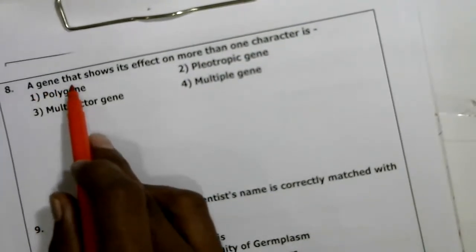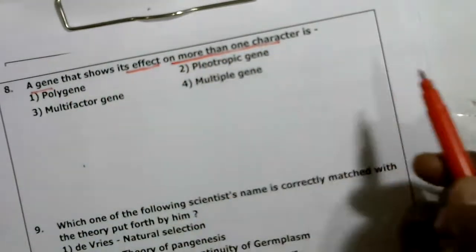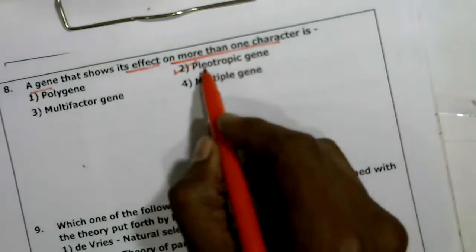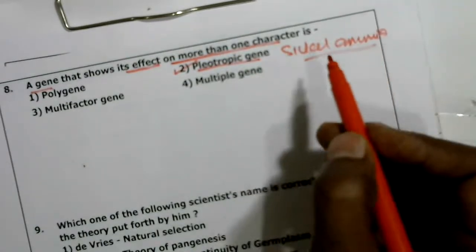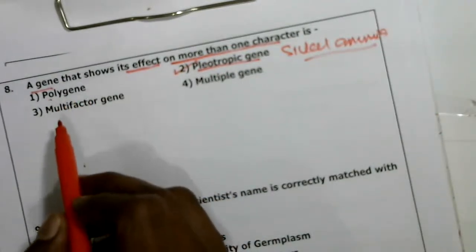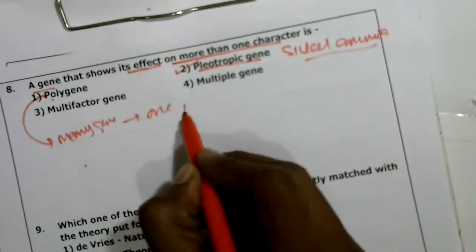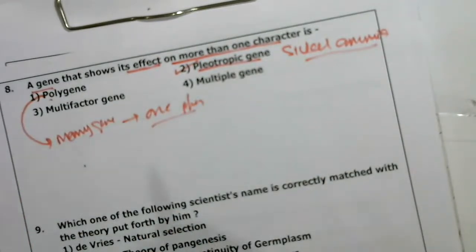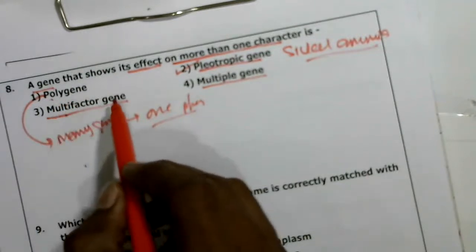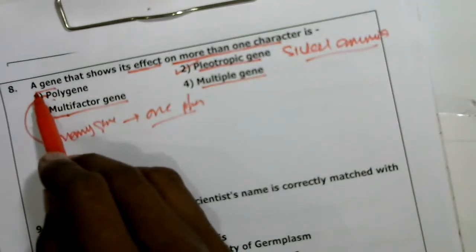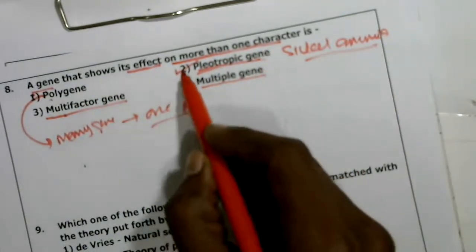Eighth question: a gene that shows its effects on more than one character — when a single gene produces multiple effects, that is known as pleiotropy. The example for pleiotropy is sickle cell anemia. In polygeny, the reverse happens — many genes regulate one phenotype, also known as multiple gene or multifactor. When a single gene produces more than one character, that is an example of a pleiotropic gene. The second option is correct.